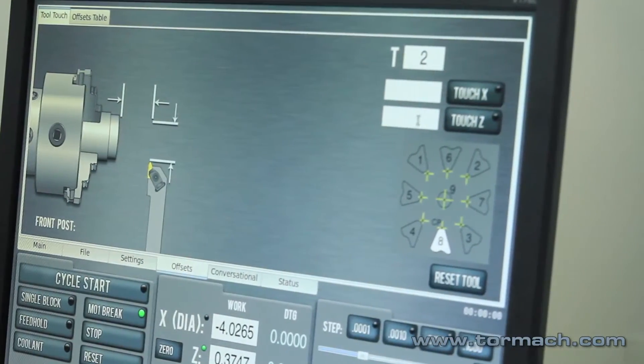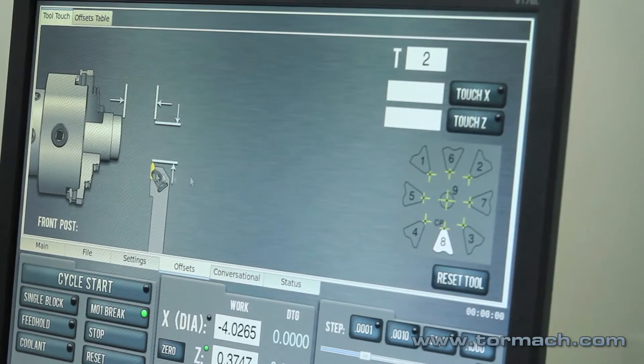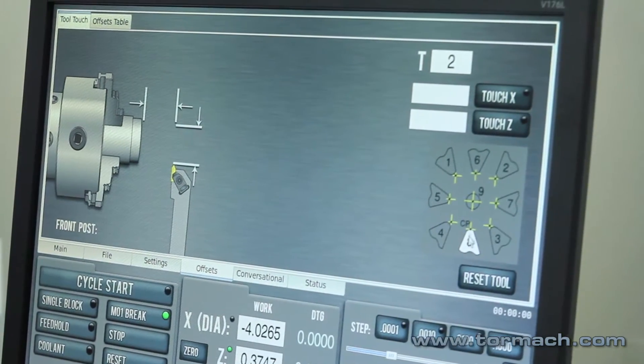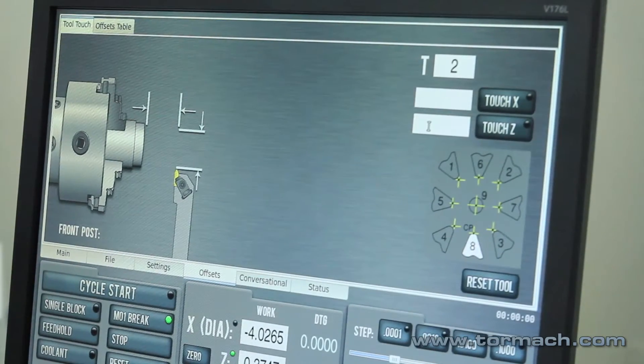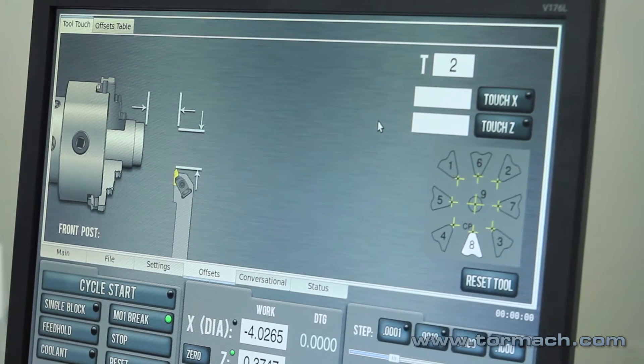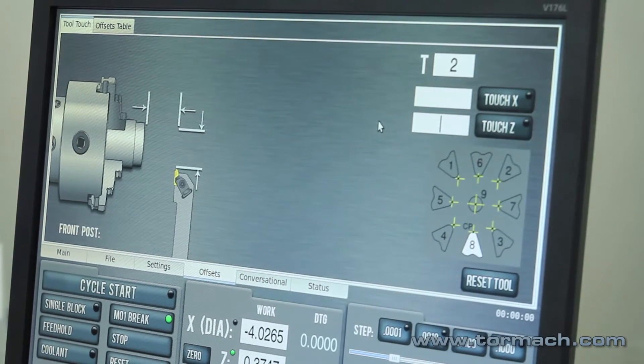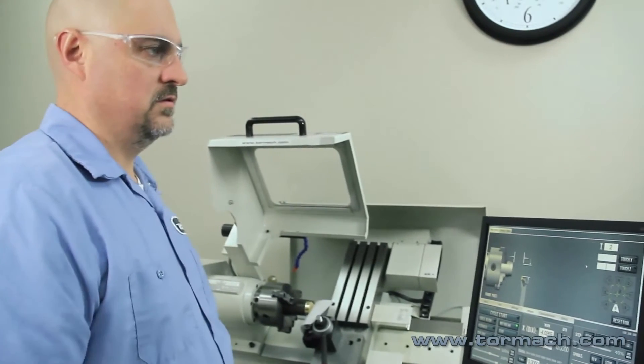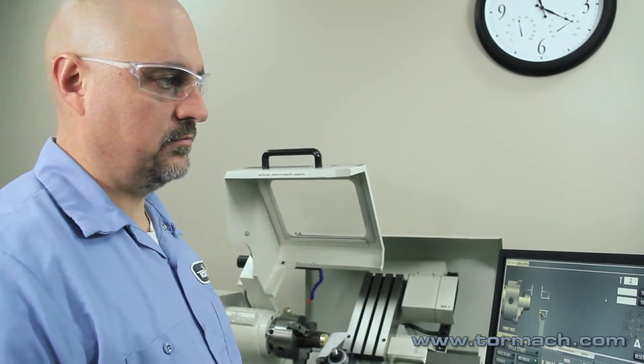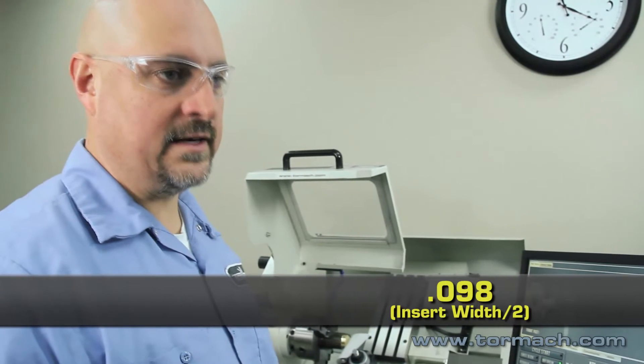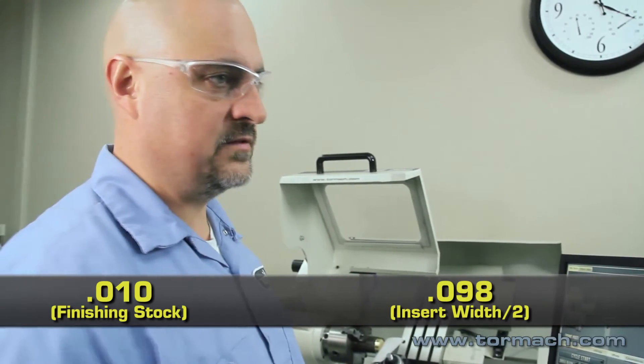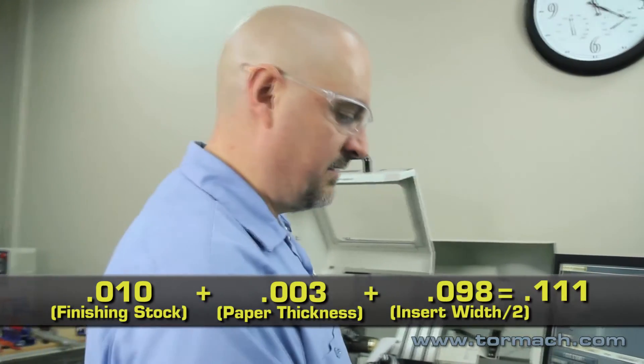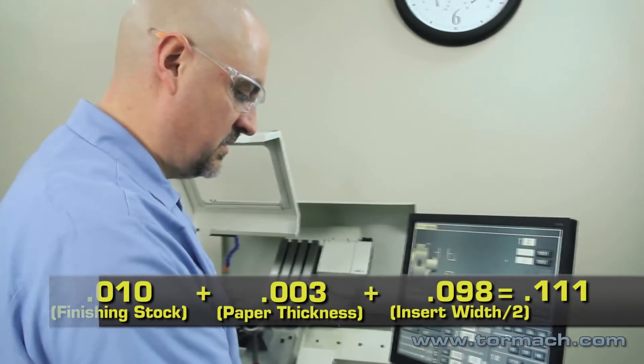Now when we go to touch Z for the grooving tool, the grooving tool, the offset is actually on the center line. So we got to add half of our grooving tool thickness and that grooving tool measured a hundred and ninety seven thousandths. So if we add half of our grooving tool would be we'll call it ninety eight thousandths plus our ten thousandths finished stock. So we're at a hundred and eight thousandths plus our paper. We'll enter a hundred and eleven thousandths for our touch Z offset.